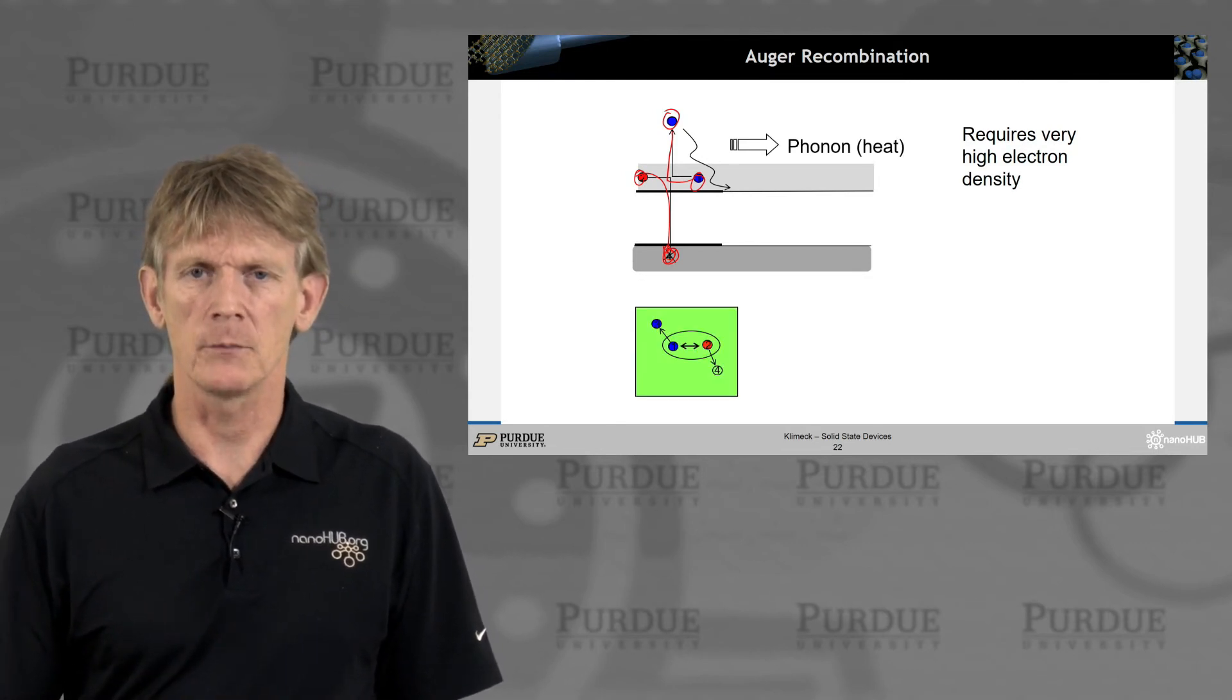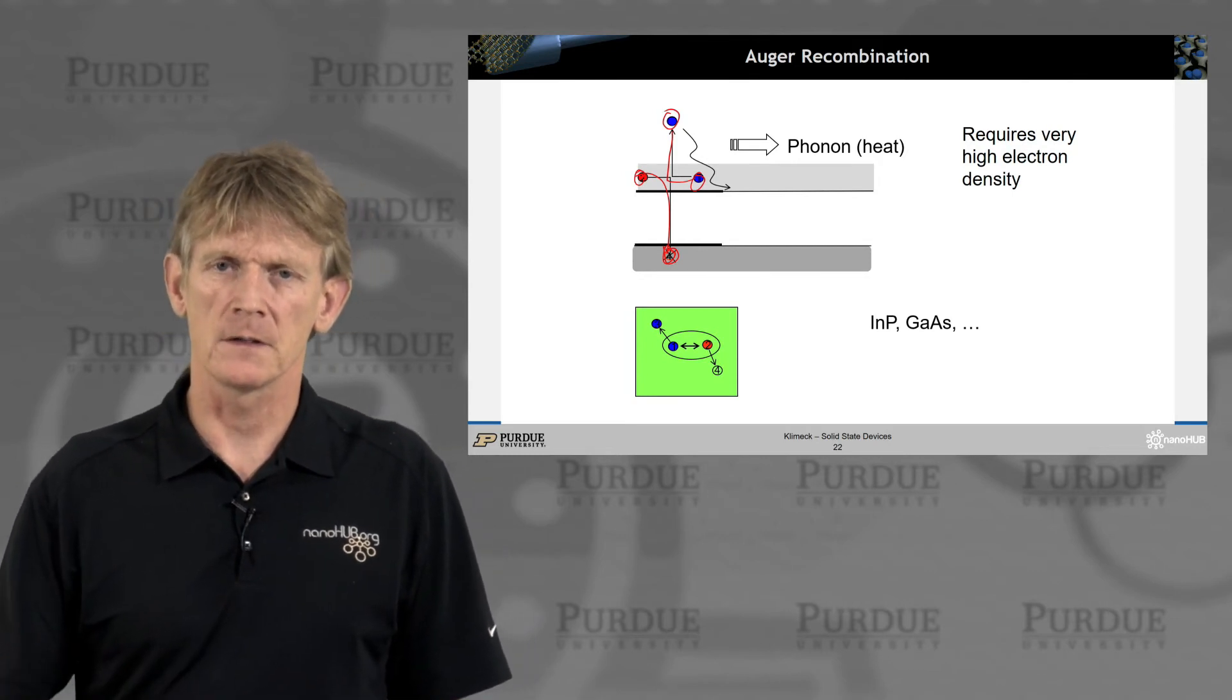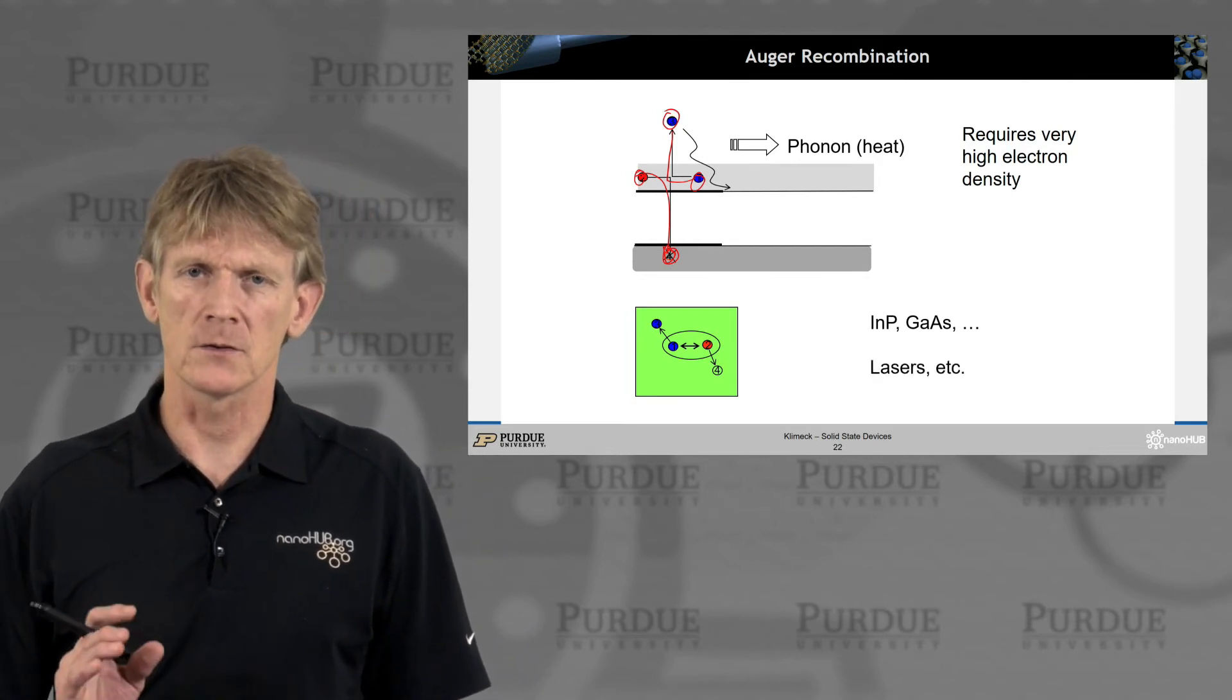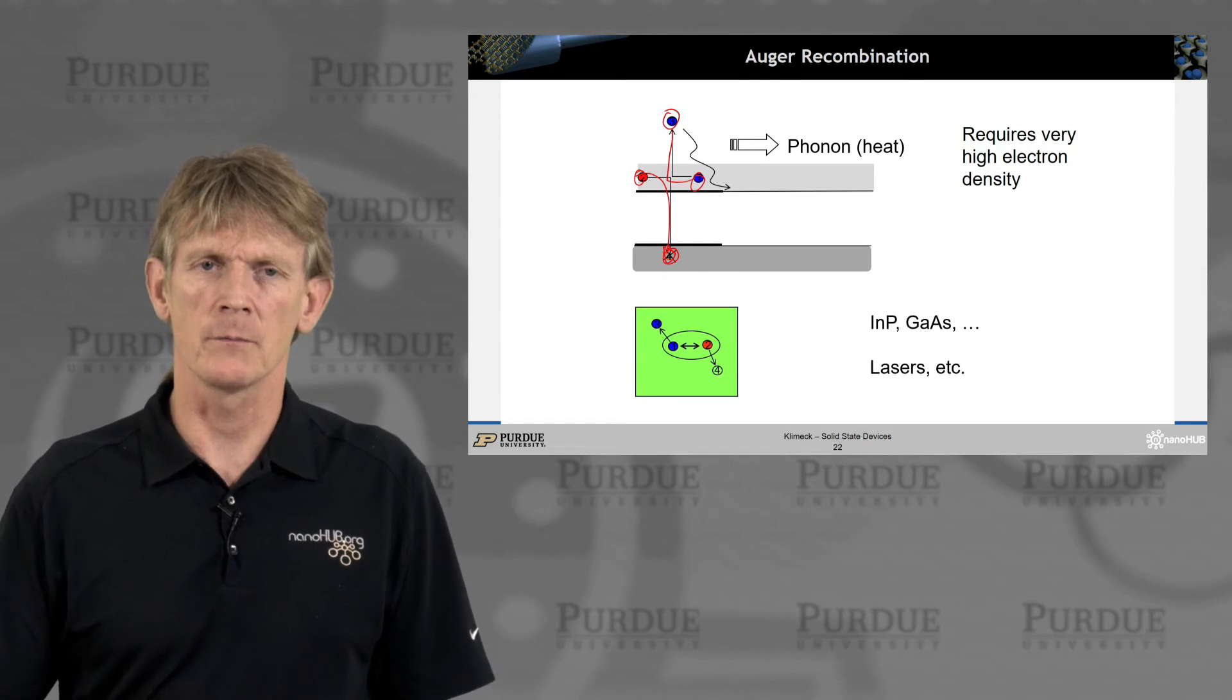So phonons and heat comes out. And again, it's a three particle process. Happens in indium phosphide, gallium arsenide, and in lasers. So these are important recombination processes there.